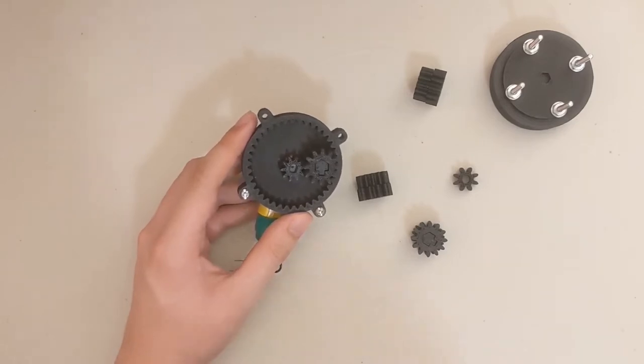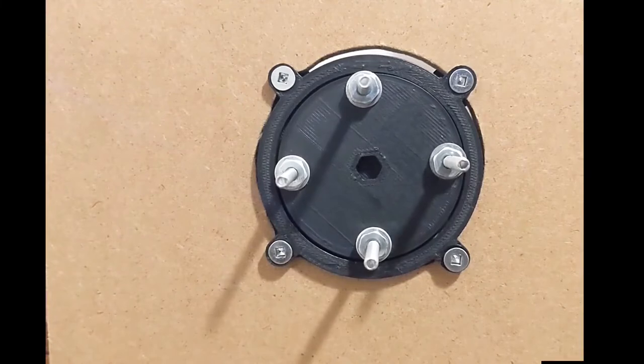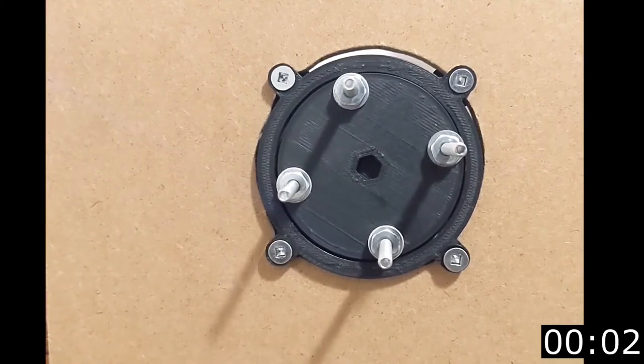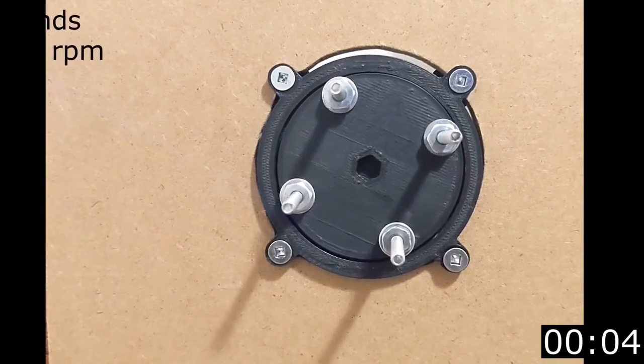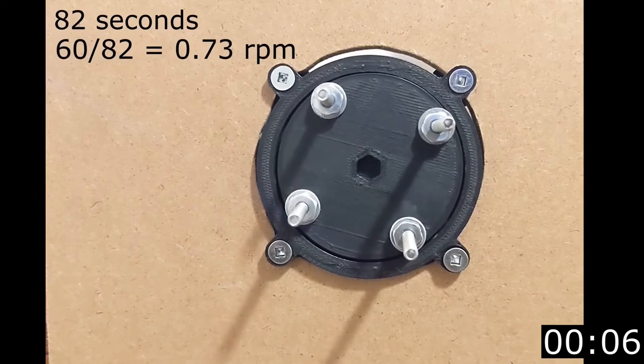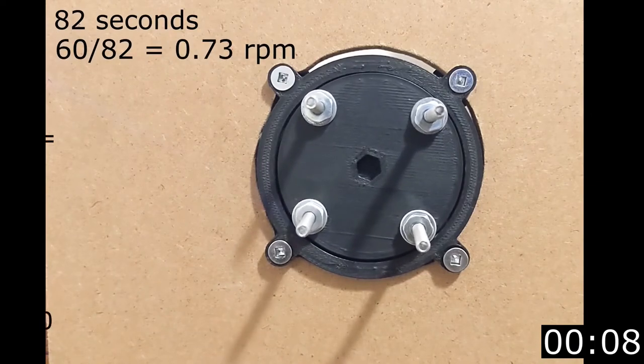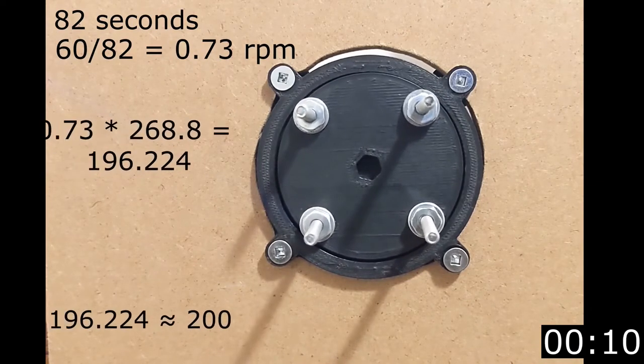Here we just have the motor turning for one full rotation. It takes about 82 seconds, so a minute and 22 seconds, which makes a lot of sense since the hobby motor runs 200 rpm.